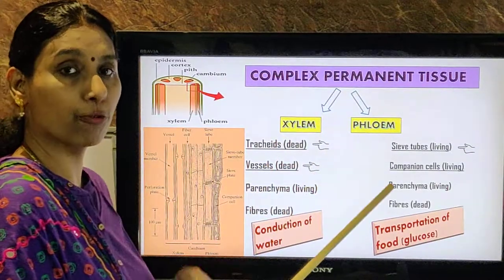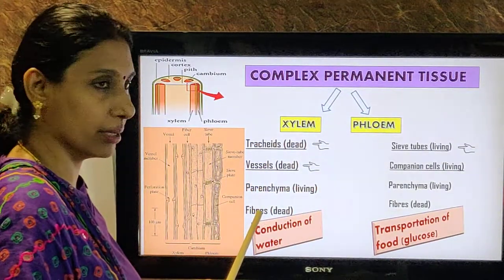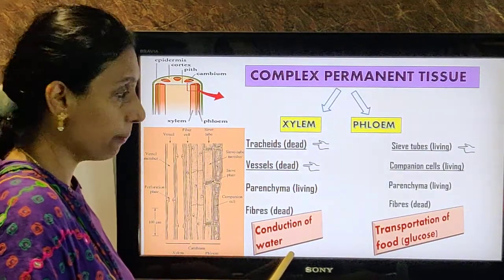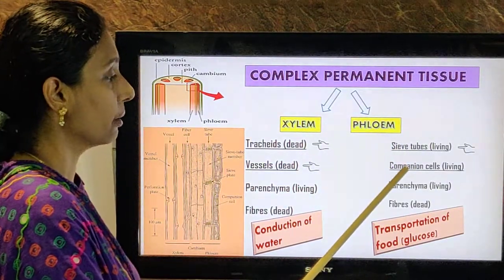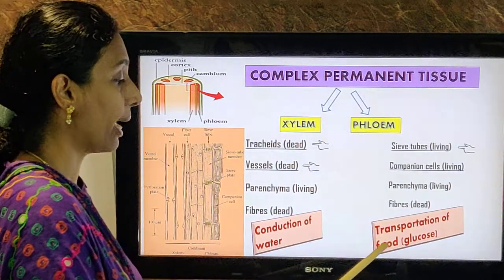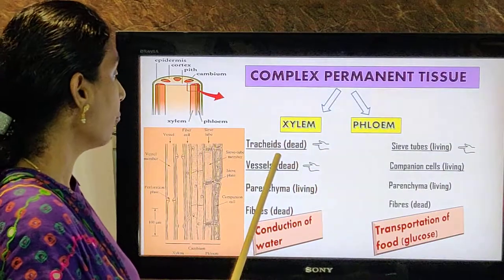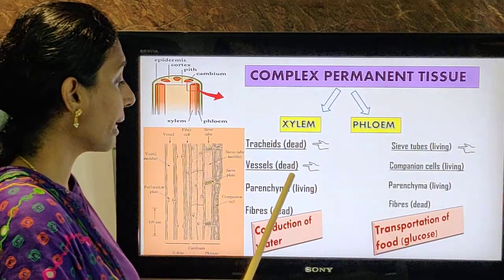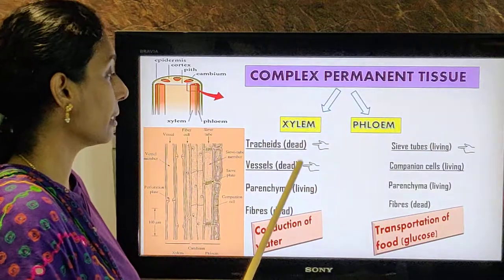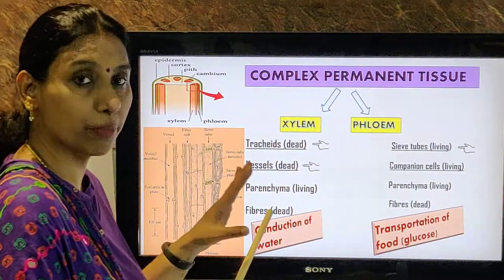Xylem is made up of four members — remember the names: tracheids, vessels, parenchyma, and fibres. All these four together help in conduction of water. Phloem is made up of four members: sieve tubes, companion cells, parenchyma, and fibres. All of them together help in transportation of food, also called translocation. In xylem, most of the elements are dead — only parenchyma is living. Among the four elements, it is tracheids and vessels which help in conduction of water; parenchyma and fibres are just supporting.